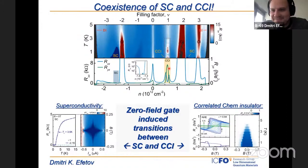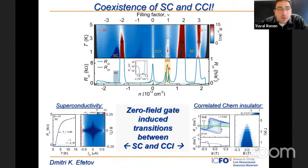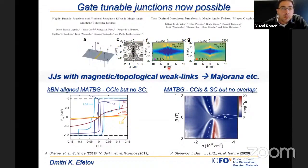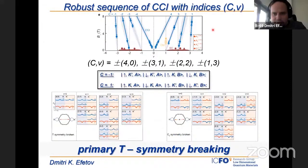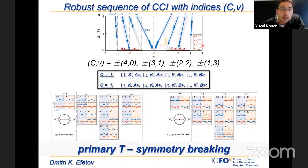An audience question: what is the range in angle over which one sees Chern insulators in high magnetic field, compared to what people see for superconductivity at zero field? We saw these Chern insulators from 1.03 to 1.15 degrees — pretty much the same range where people see correlated insulators and superconductivity. It's not a bigger range. In principle, these topological assumptions hold for a much broader range of twist angles. The conditions needed for superconductivity are much narrower than the conditions for the topological ground state, so topological properties should be much more robust and observed at different twist angles.